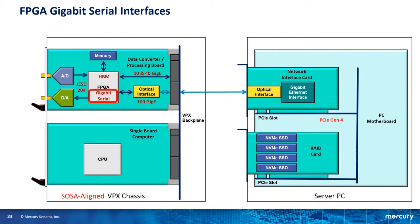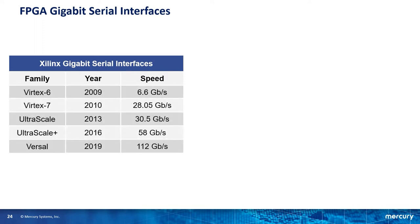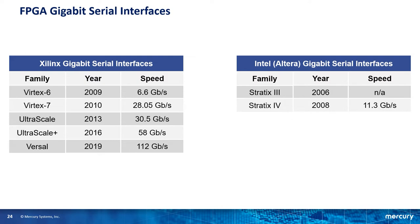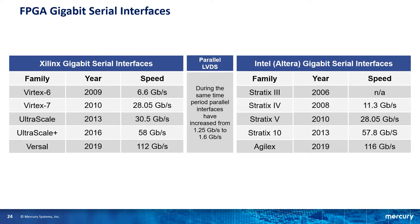Like the JESD204 interfaces, the FPGA gigabit serial interfaces have gotten faster over time. If we look at the Xilinx families over the past 10+ years, we start with Virtex 6 where the interface speed was 6.6 gigabits per second, and with each subsequent family the interfaces became faster — to 58 gigabits per second on UltraScale Plus, and now 112 gigabits per second on Versal. If we look at Intel, formerly Altera, they have a similar history — starting with Stratix 4 at 11 gigabits per second, all the way through Agilex today at 116 gigabits per second. In comparison, the parallel LVDS interfaces on these FPGAs haven't gotten much faster — across both Xilinx and Intel, we went from 1.25 to about 1.6 gigabits per second during that same period.